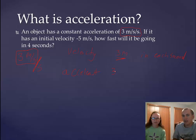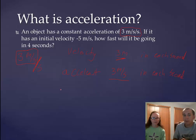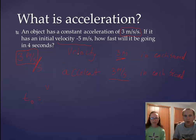So acceleration of three meters per second means in each second your velocity changes three meters per second. Every second your velocity changes three meters per second. And it's a positive three meters per second, which means my velocity becomes more positive. So let's take a look at what that means. At time zero, t-zero, I said my velocity was equal to negative five meters per second.